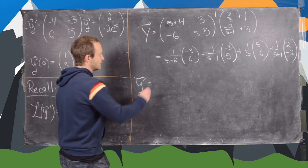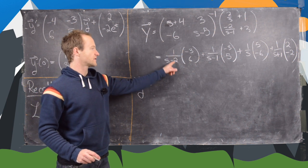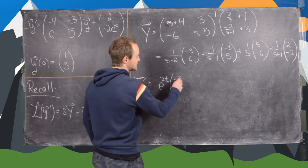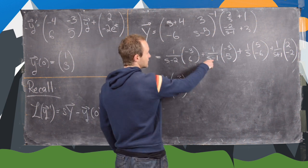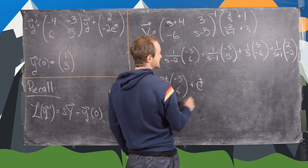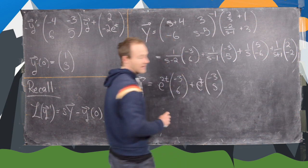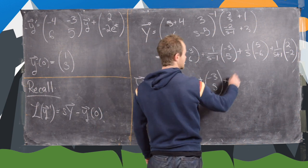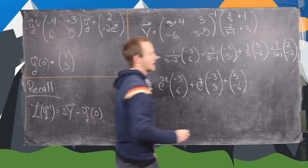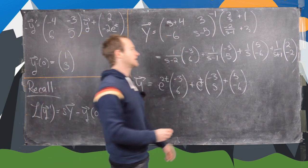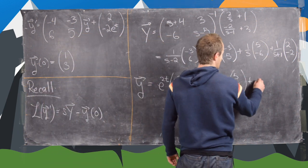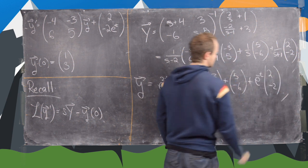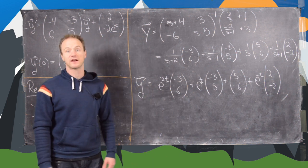Now we apply the inverse Laplace transform to get our solution. The inverse Laplace transform of 1/(s-2) gives e^(2t), of 1/(s-1) gives e^t, of 1/s gives 1, and of 1/(s+1) gives e^(-t). So our final solution is y = e^(2t)·[-3; 6] + e^t·[-3; 5] + [5; -6] + e^(-t)·[2; -2].